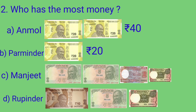Moving on to Manjeet. Manjeet has 4 notes. 5 and 5 is equal to 10; 10 and 2 is 12; 12 and 1 is 13. So Manjeet has Rs. 13 in total. Rupinder has 3 notes. 10 and 5 is equal to 15; 15 and 1 rupee more make Rs. 16. So Rupinder has Rs. 16.